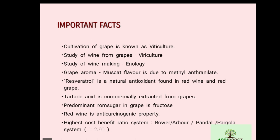The aroma of grape — the muscat flavor — is due to the presence of methyl anthranylate. The red color of grape is due to anthocyanin pigment, and the foxy aroma in grape is caused by the same methyl anthranylate compound.